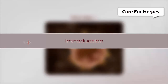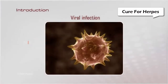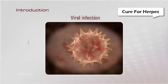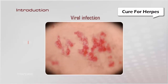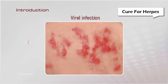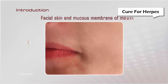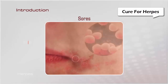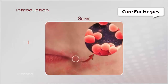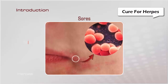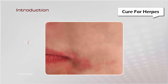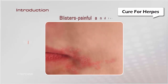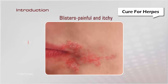Herpes is a viral infection that commonly affects the facial skin and mucous membrane of the mouth and genital area. This infection causes sores initially in the area where the virus gains entry into the body, which then form blisters that are very painful and itchy. The blisters seem to heal completely and then reappear.